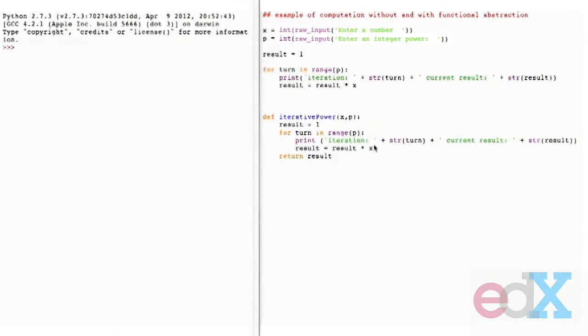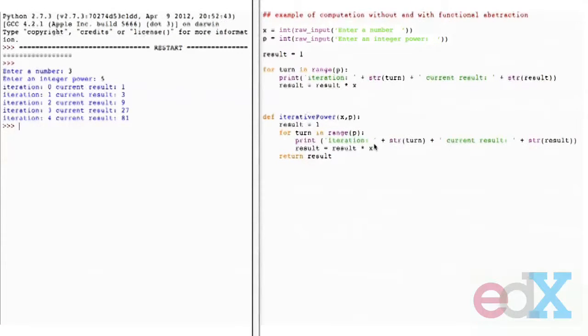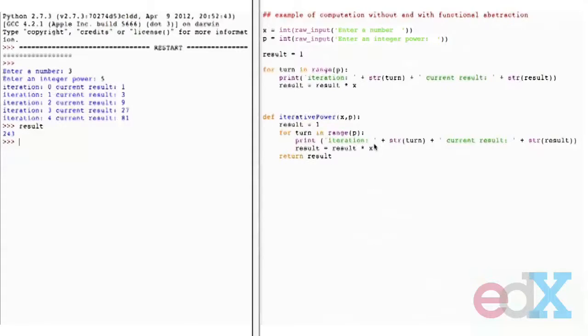If I go over to Python, I can load that computation. Let me give it 3 and 5. It prints through the stages, telling me at each iteration what the current result is. It starts as 1, then 3, then 3 squared, then 3 cubed, then 3 to the fourth. Wait, didn't I want to take it to the fifth power? Notice that my print statement is printing before I actually do the work. When I'm done, I've returned the value in result - there it is, 243.